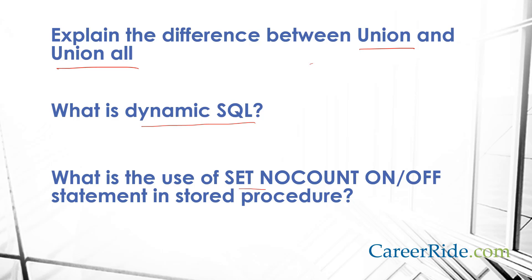What is the use of the SET NOCOUNT ON and OFF statement in a stored procedure? When SET NOCOUNT is OFF, the count is returned, which indicates the number of rows affected by a SQL statement. When SET NOCOUNT is ON, no count will be returned. By default, NOCOUNT is set to OFF. When you don't want to display the number of records affected, set it explicitly to ON.